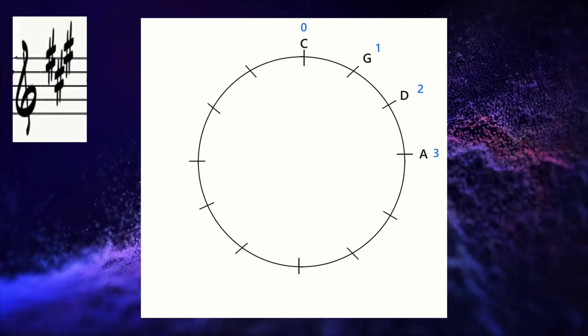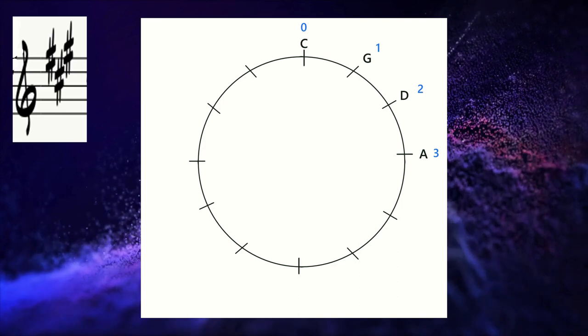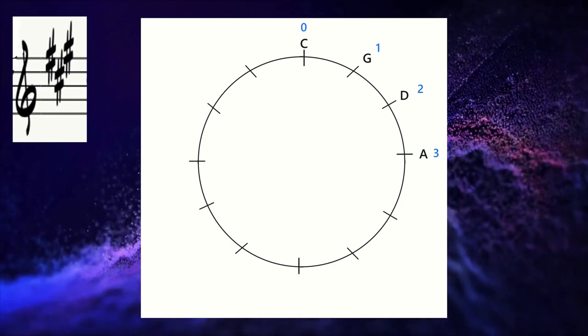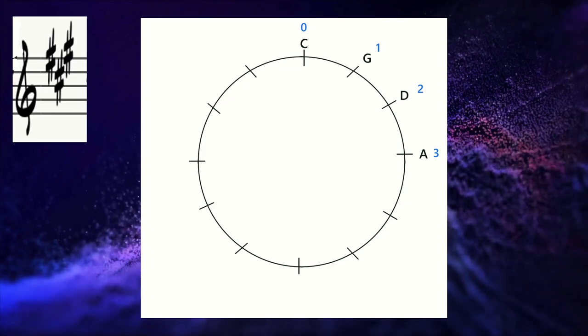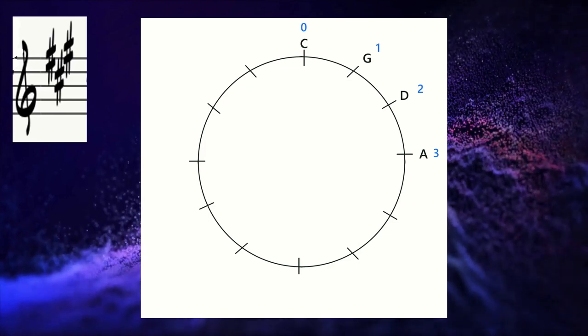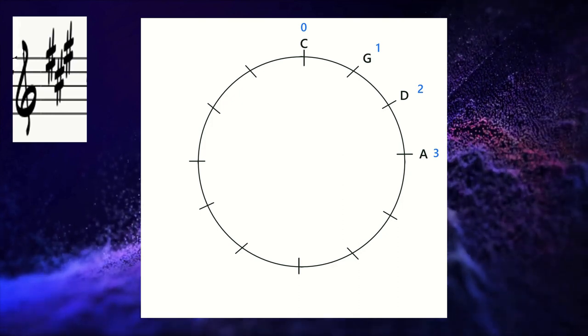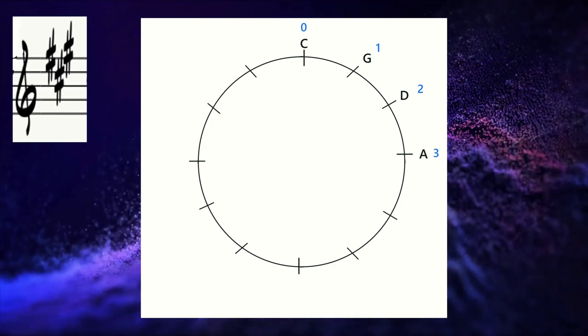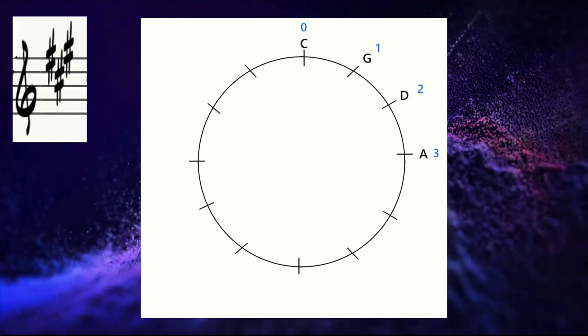So I hope you're noticing a pattern here that these sharps are always in the same order. It always starts with F sharp and then C sharp and then G sharp. And if you never learned this, here is a fun little way to remember the order of sharps: Fat Cats Go Down Alleys Eating Bugs.